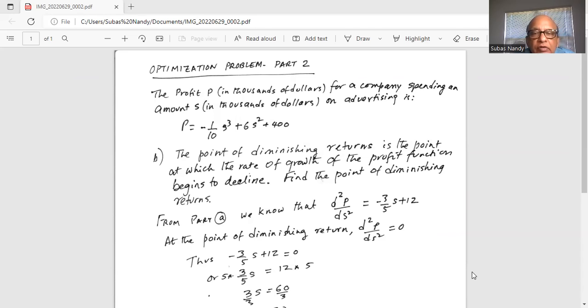The point of diminishing returns is the point at which the rate of growth of the profit function begins to decline. Find the point of diminishing return.